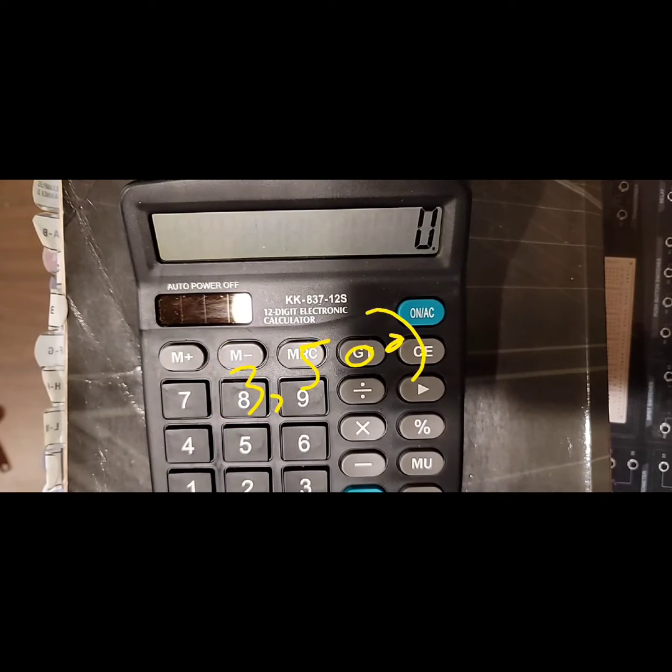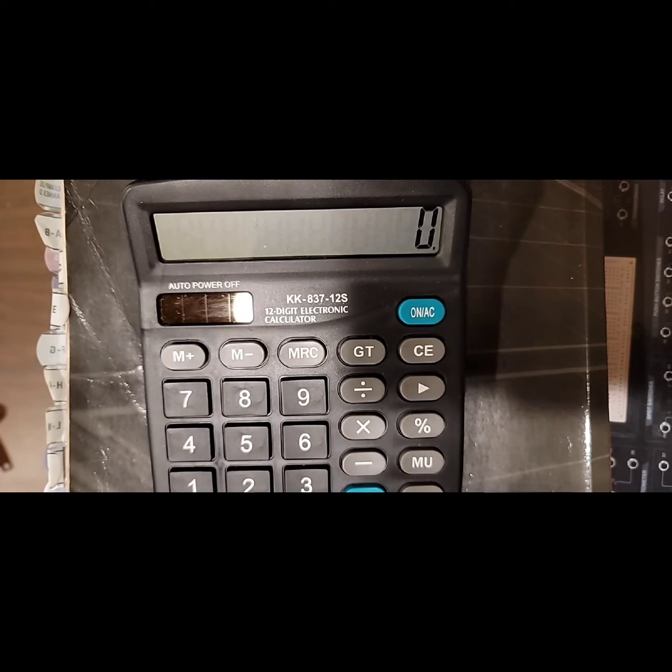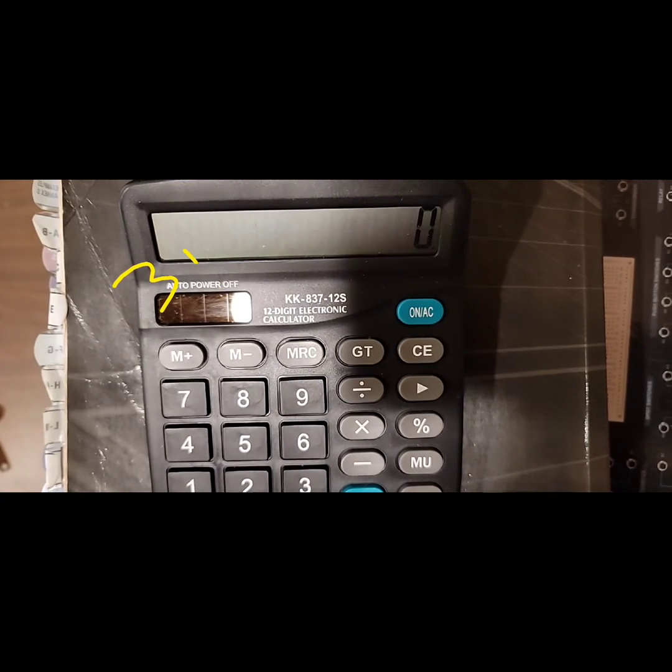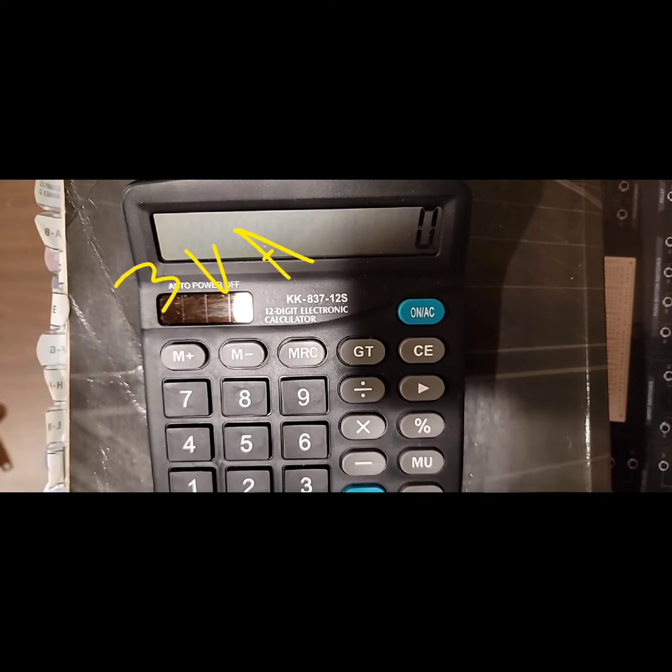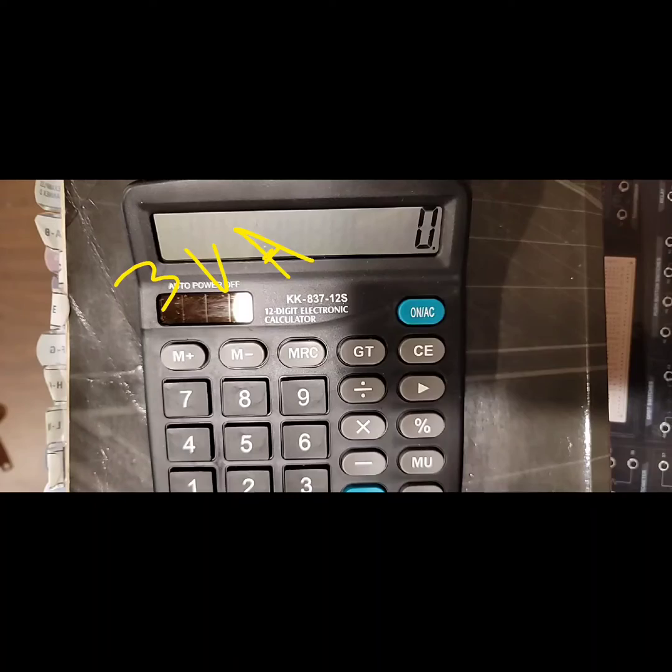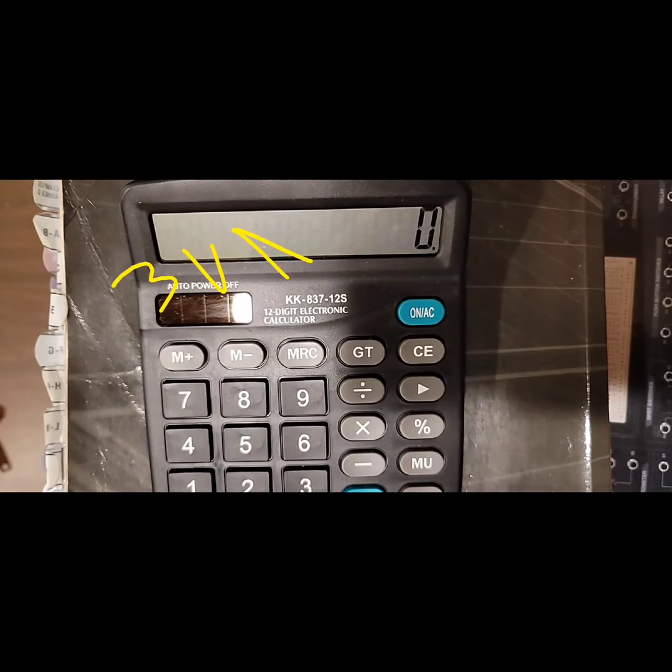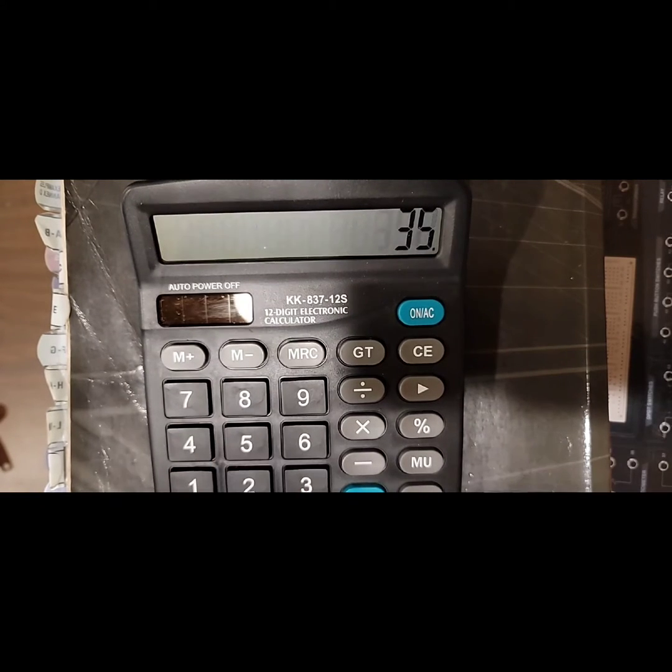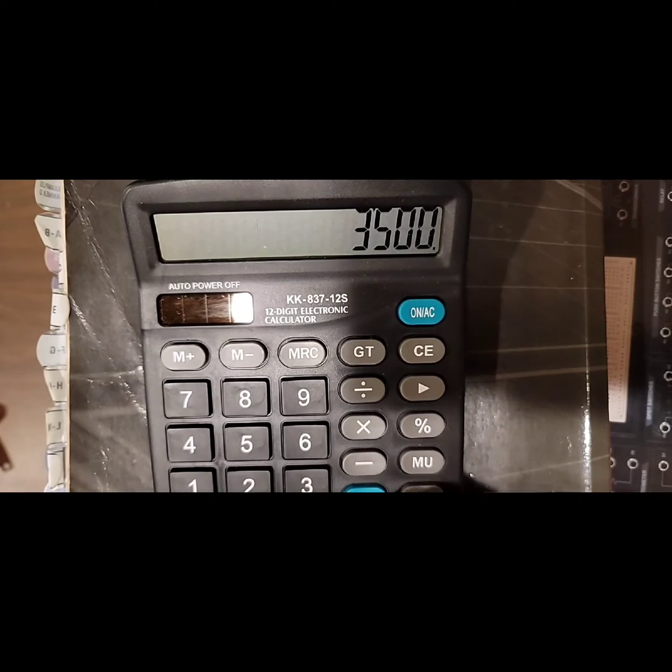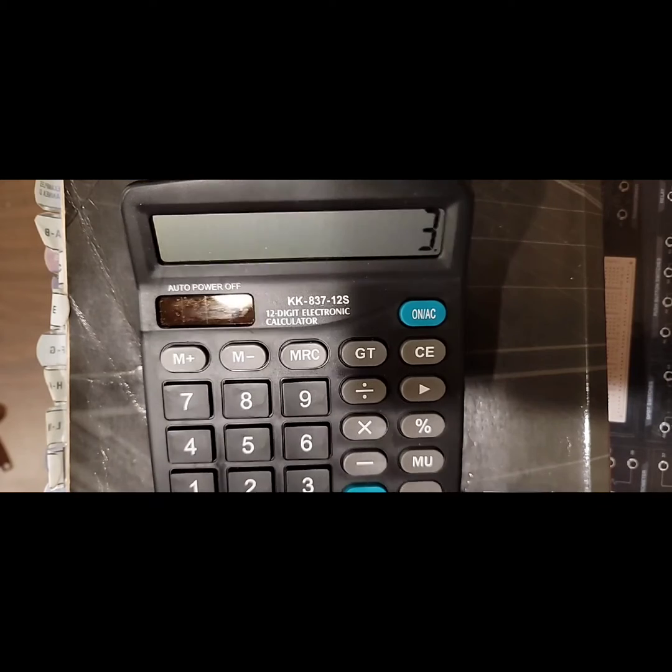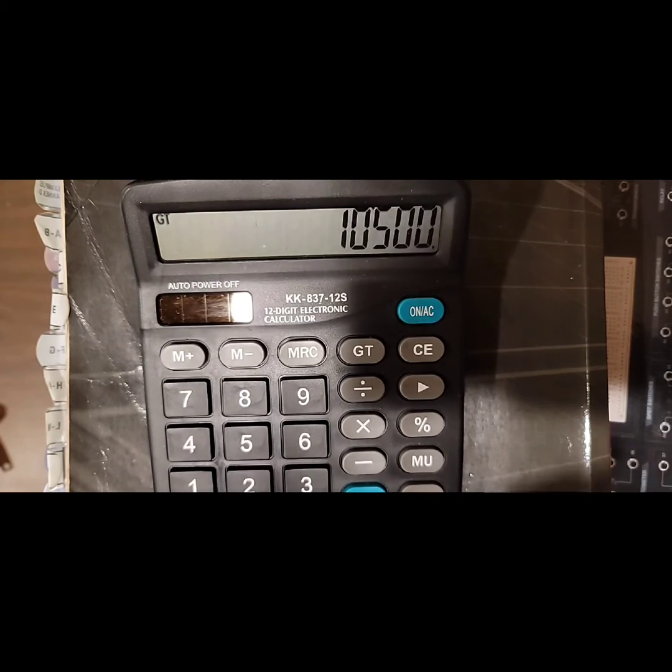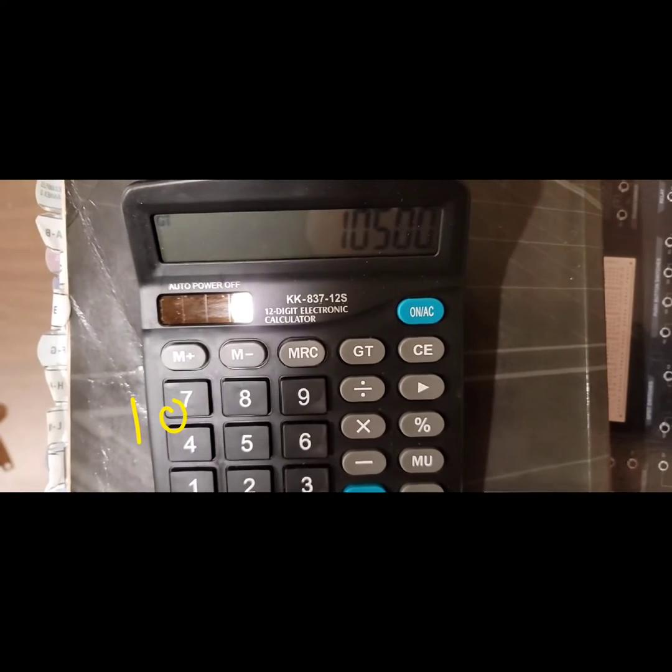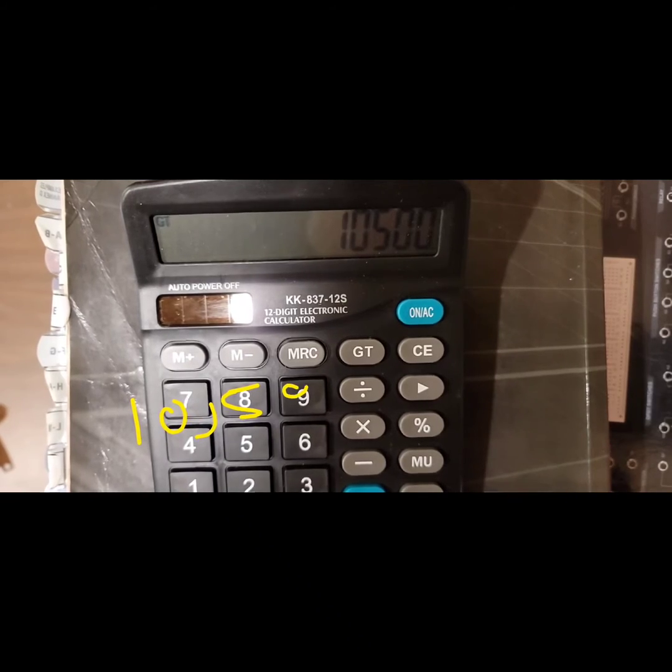The first thing we're going to do is multiply that 3,500 by three. If you've learned in our other videos, there are three VAs per square foot for a residential dwelling unit home. So we're going to take our square footage, 3,500, and multiply that by three. That's going to give us 10,500 VAs.